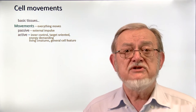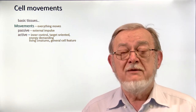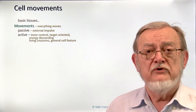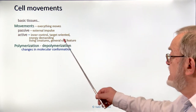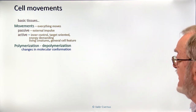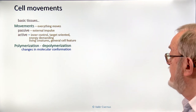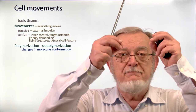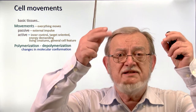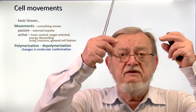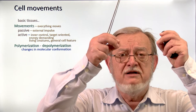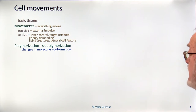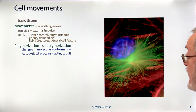The moving object decides when to move and in which direction, but it requires an internal energy source. Those creatures which can actively move are living creatures — all life forms can show a certain type of movement. The typical movement present in virtually every single cell is based on polymerization and de-polymerization of large molecules. A huge molecule gains units and becomes longer, or loses units and becomes shorter, and this change in molecular conformation is the basis of movement.